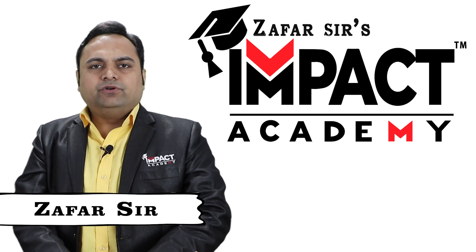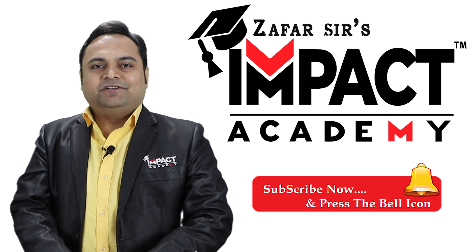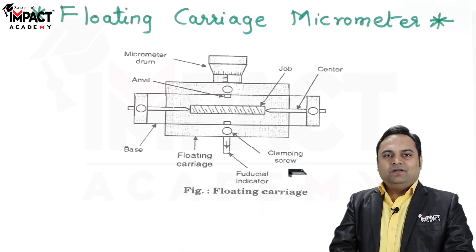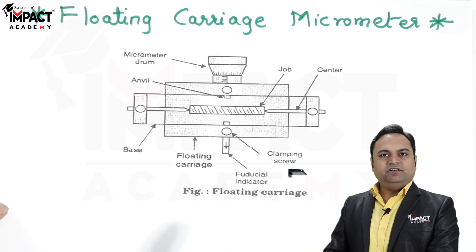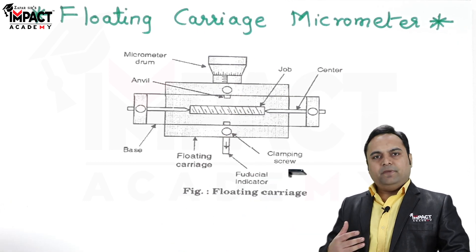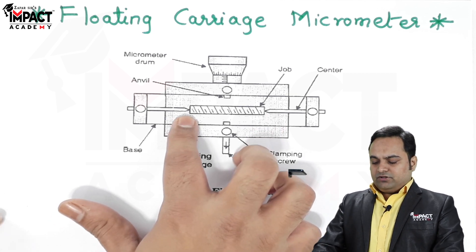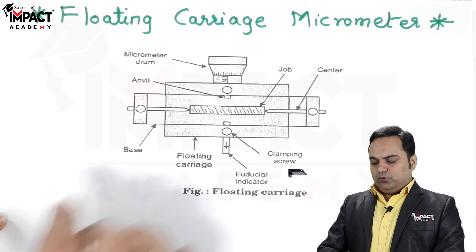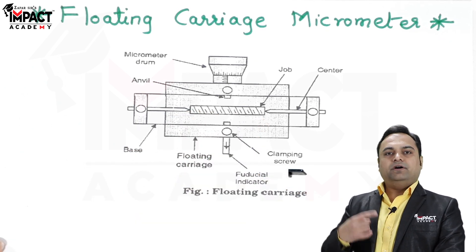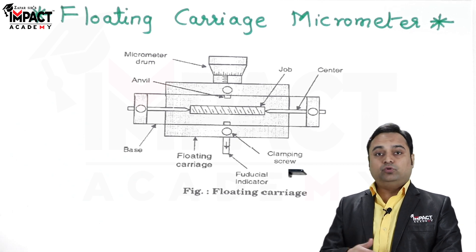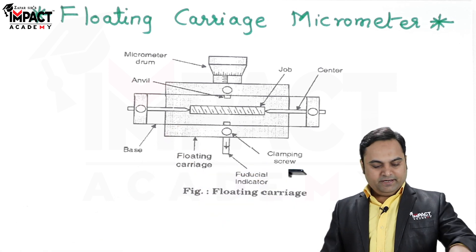Here in this video we are going to see the floating carriage micrometer. Here is the diagram of the floating carriage micrometer — it is basically a measuring instrument used to measure the diameters of a screw. For a given screw, we can measure the outer diameter, the root diameter, the effective diameter, or the main diameter.